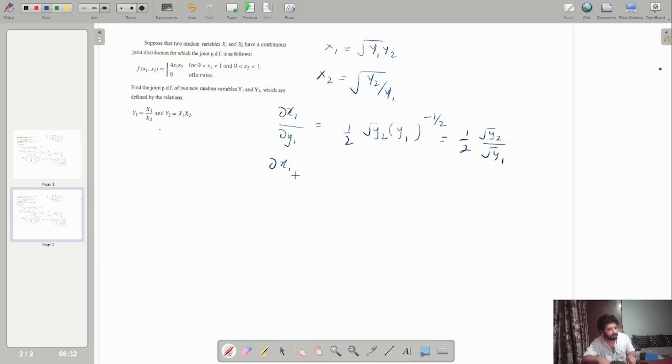Similarly, if I differentiate with respect to y2, I will get square root y1 over square root y2, and here I will get 1 over 2 square root y1 by square root y2.